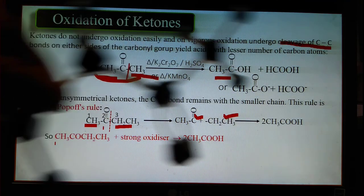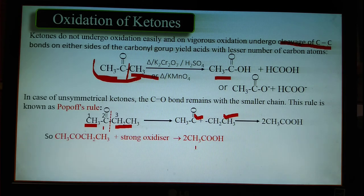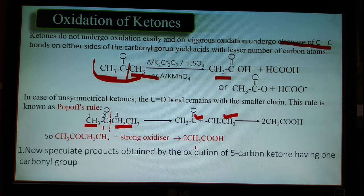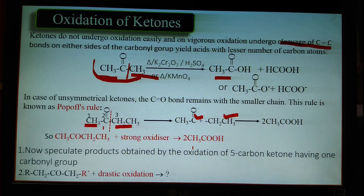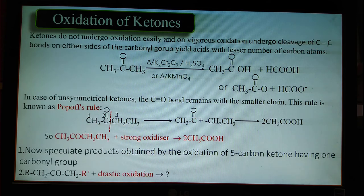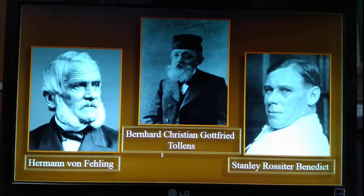So on oxidation of butanone we get two moles of acetic acid. Now here are two questions: Number one — speculate the products obtained by the oxidation of a five-carbon ketone with one carbonyl group (pentanone). Write down your answer in your exercise book and send it to me. Question two — for ketones of the type CH₂–CO–CH₂R under drastic oxidation, what products will you get? Show your work.